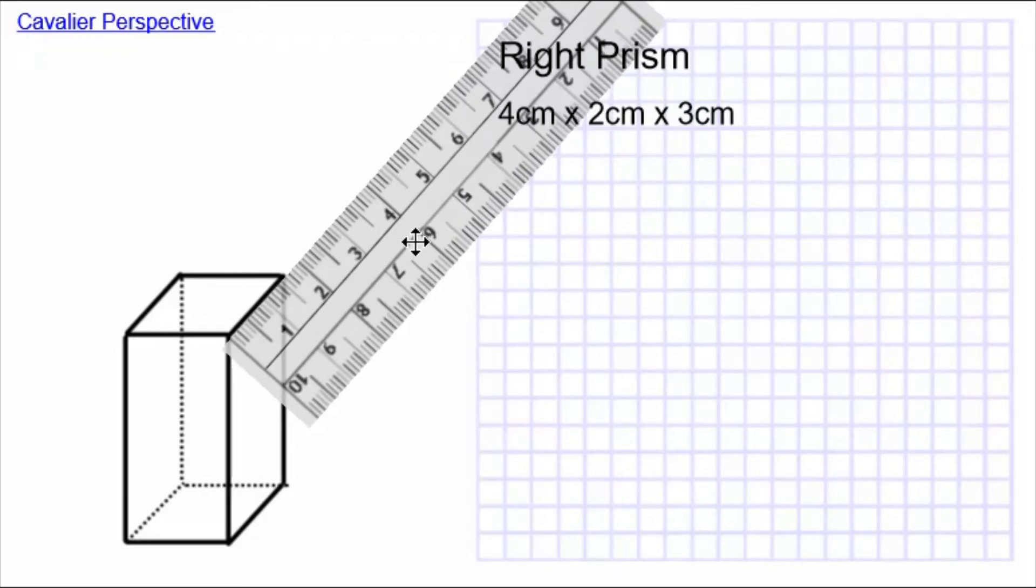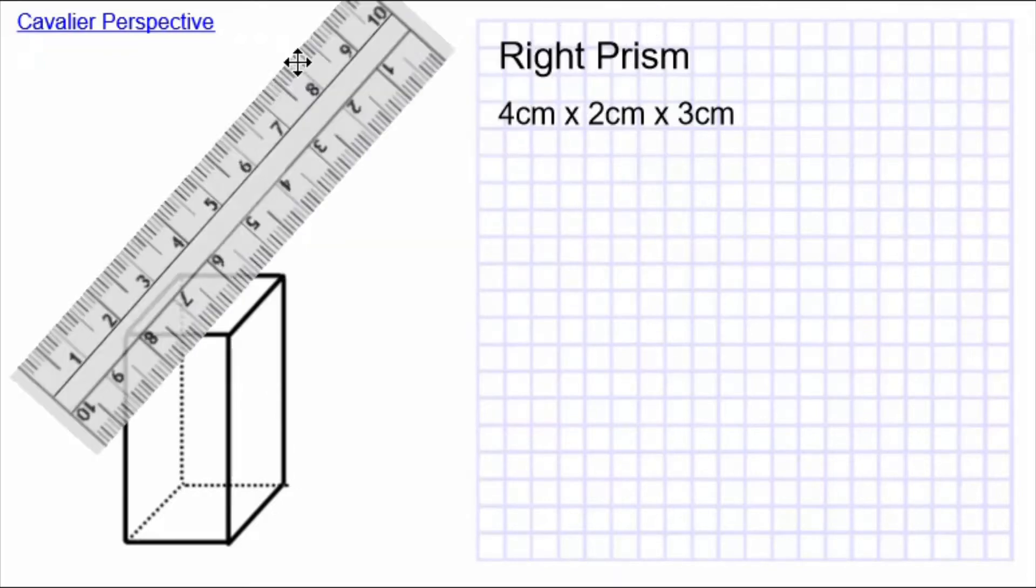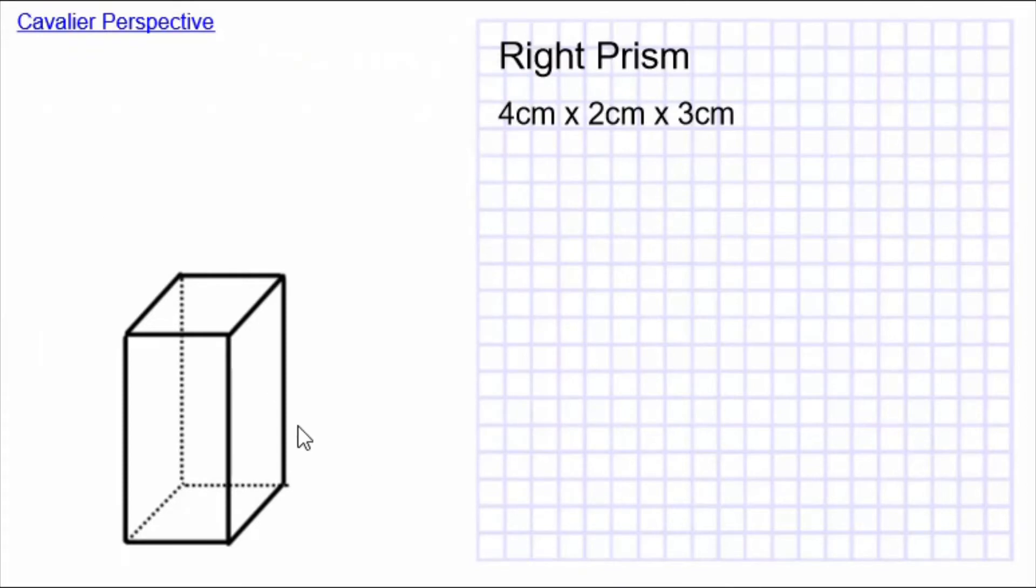Well, that's good when you're drawing Cavalier perspective. It just makes it harder for someone who looks at the drawing to know exactly what size everything is. Because the front has two dimensions that can be made to look accurate, and the depth is a third dimension that doesn't look accurate.